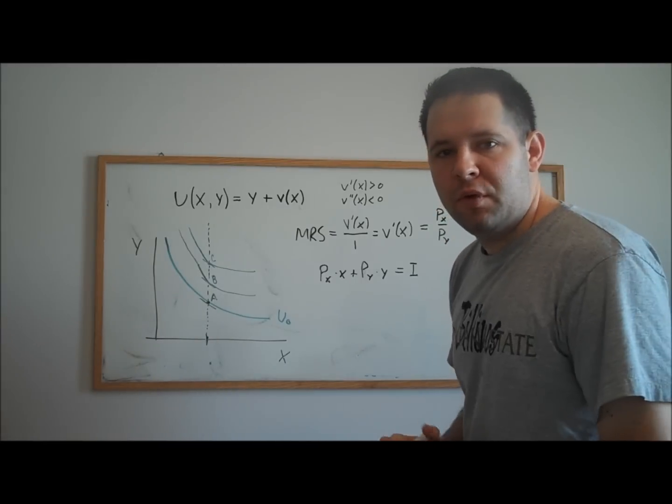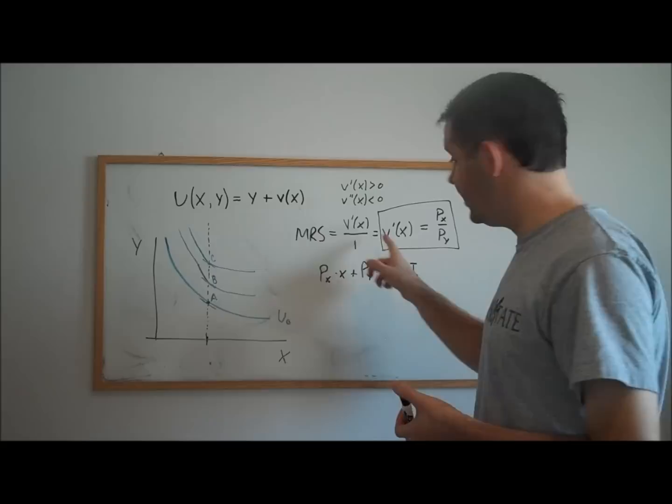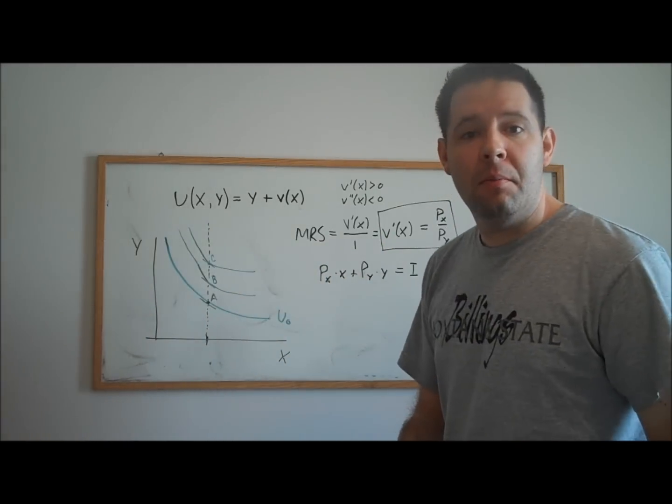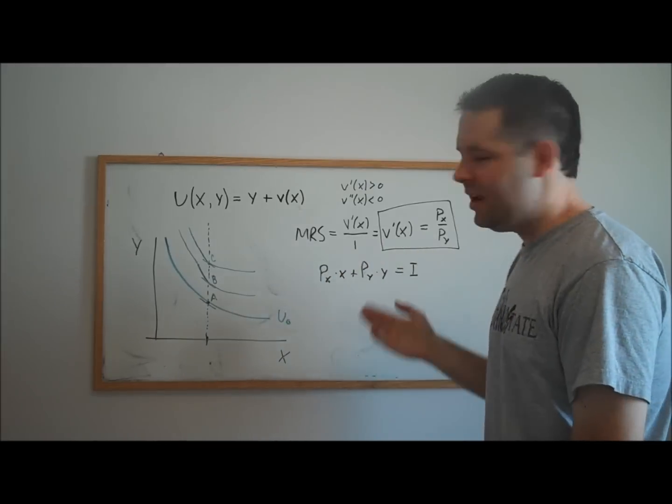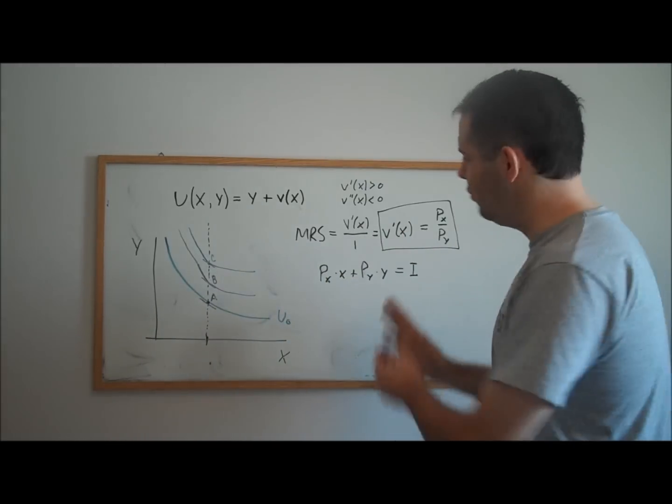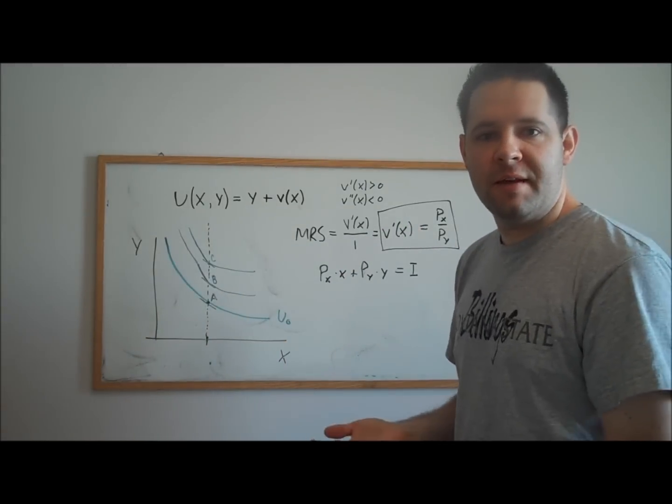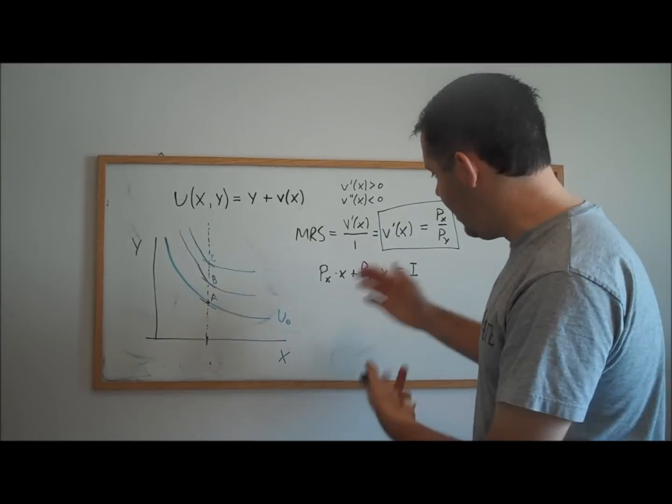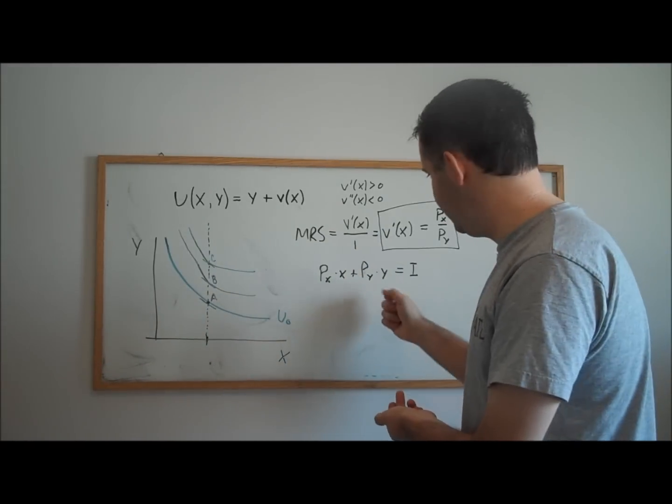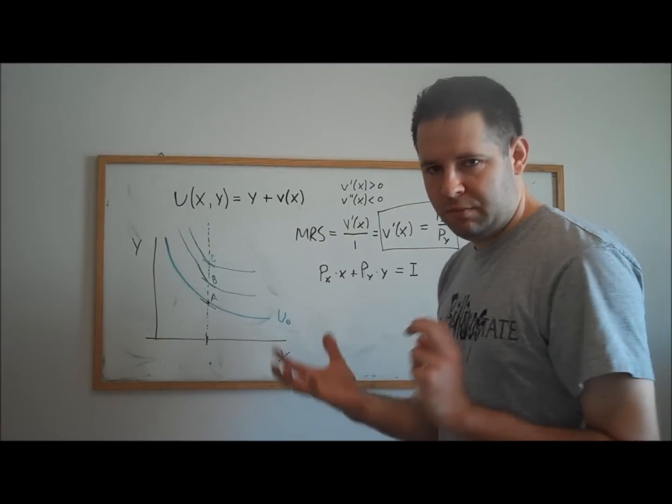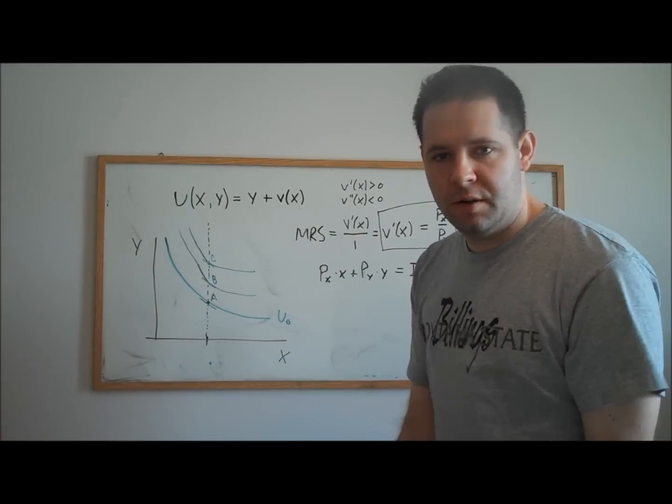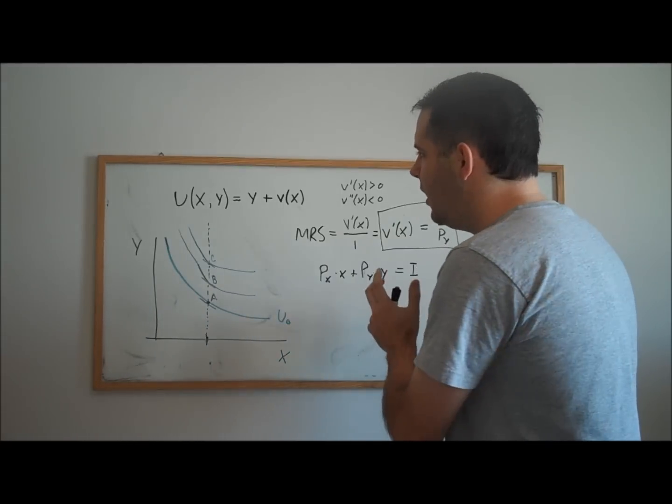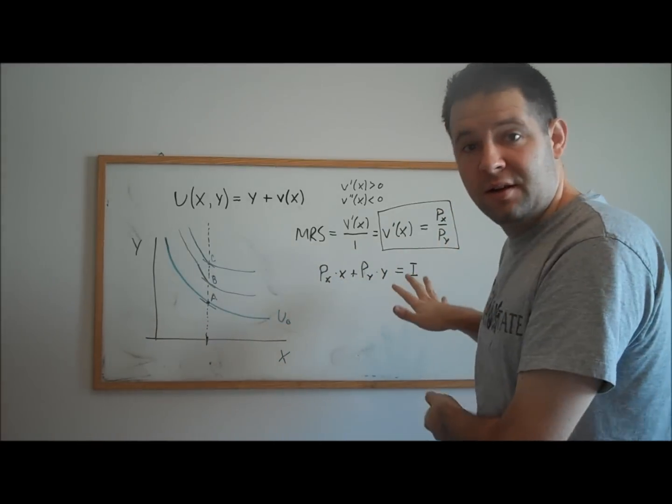So to solve for the demand curve, the first thing to notice is that the slope's equal condition perfectly pins down how much x. We'll need to be able to invert this v of x function. Once we do that, that will give us our demand for x. And once we have our demand for x, we can just plug into the budget constraint to figure out how much money we have left over to devote to good y. And that optimal bundle gives us our demand. So this is just a typical consumer theory problem, but it's a very particular case.